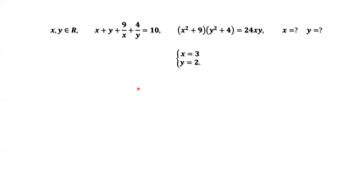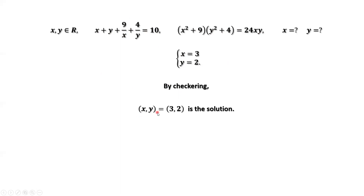We need to check if x equals 3, y equals 2 is the solution for this question. By checking — replace x by 3, y by 2, and verify the left-hand side equals 10, and the left-hand side equals the right-hand side for both conditions. By checking, x equals 3, y equals 2 is the solution. That's all. Thanks for watching and see you next time.